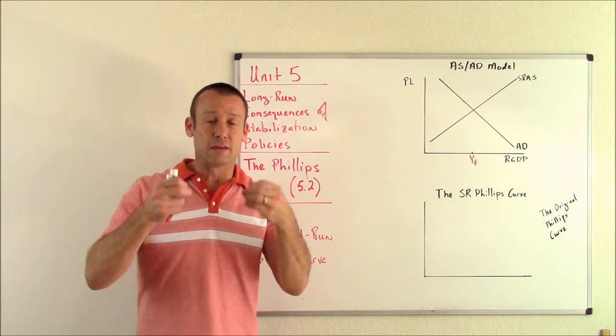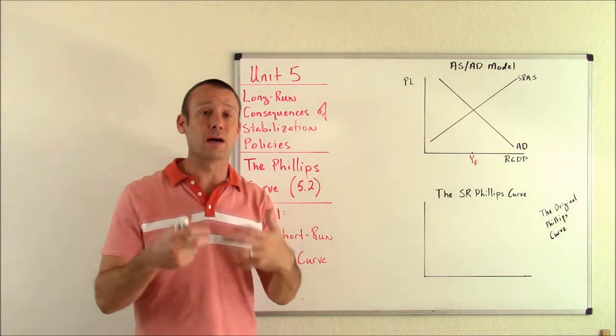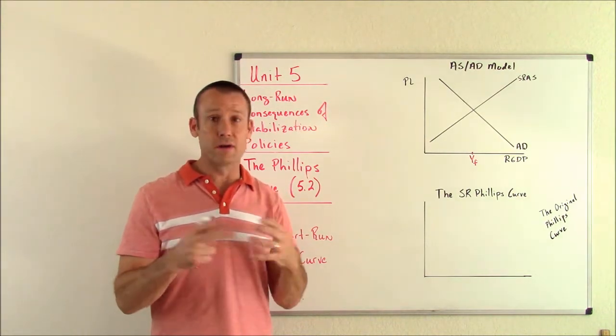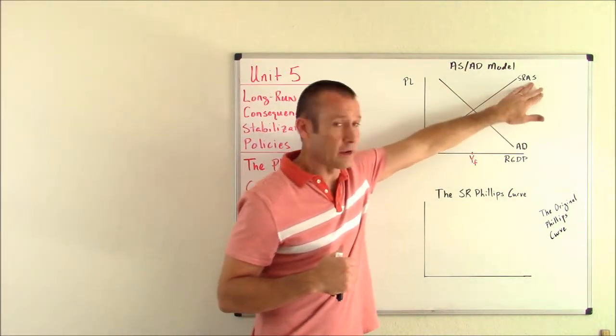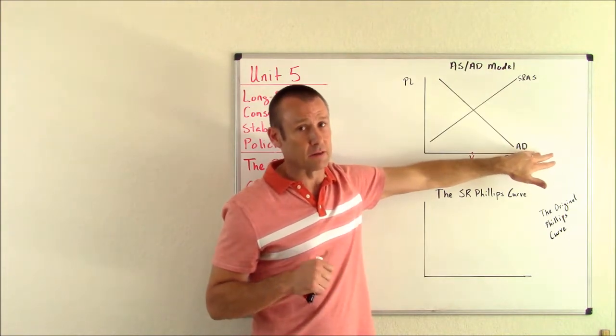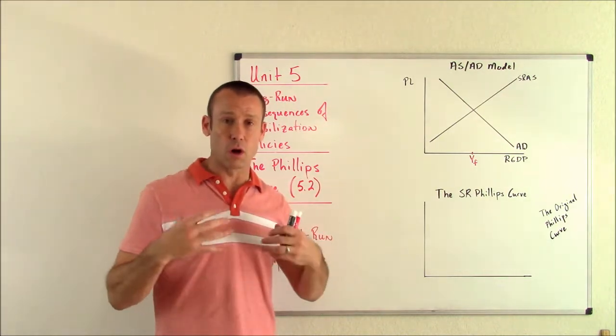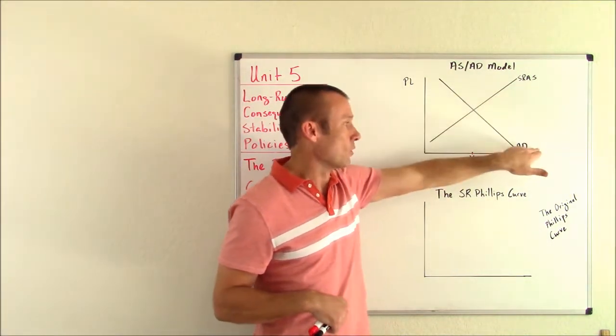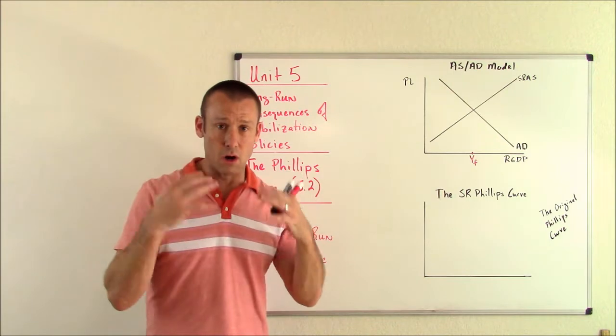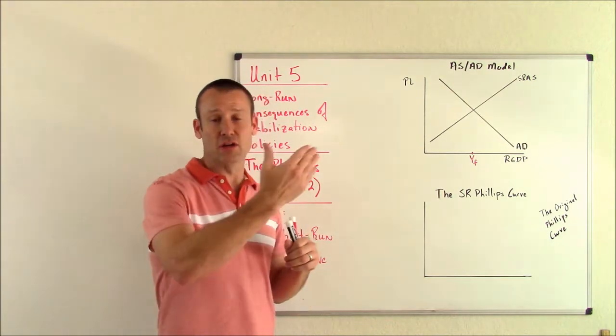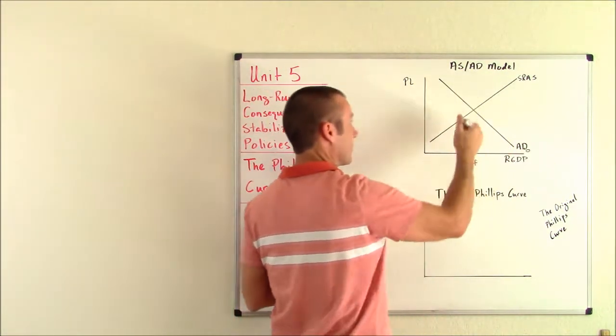The only lines I've got are the SRAS and the AD. Our economy is in equilibrium where these two curves intersect. Another way to say this is we are always on our SRAS curve, not always on the LRAS. Here's the question I like to ask my students: which one is more unstable, the total production line or the total spending line? The answer is AD, the total spending line, that is much more unstable.